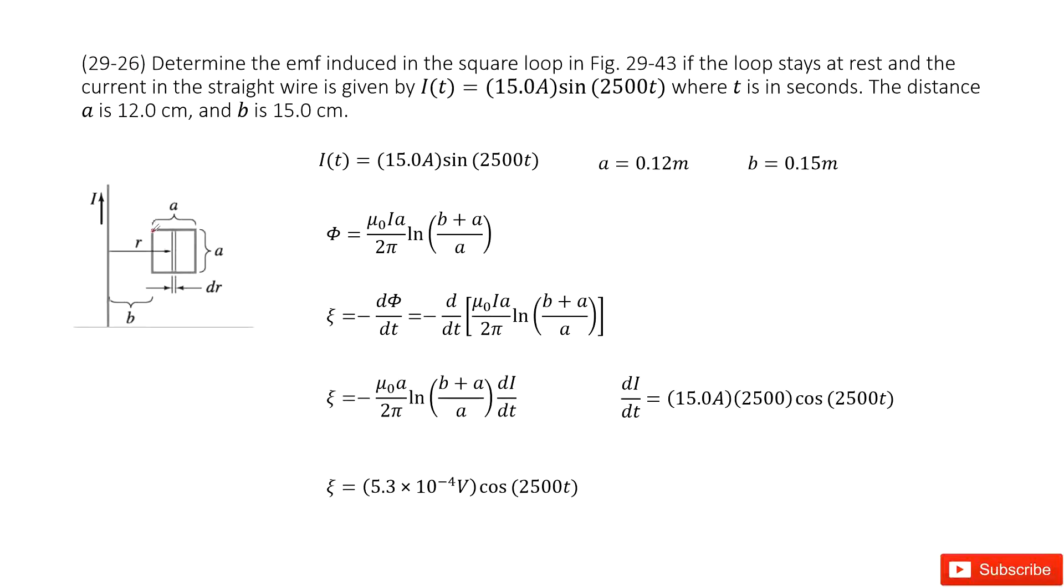So initially, we can see we list the given quantities. It tells us the current in this wire is given as i(t). The a and b are constants. It is also given there.